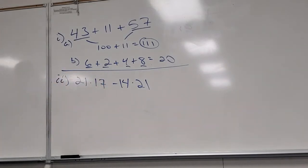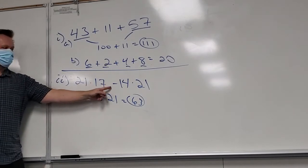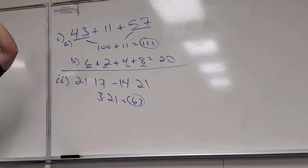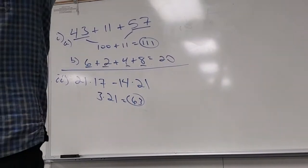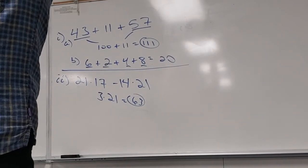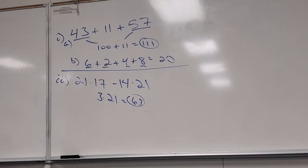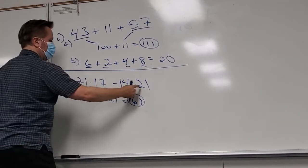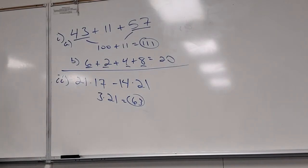Seventeen twenty-ones in a row minus fourteen twenty-ones — fourteen of them cancel, so it really is seventeen things minus fourteen things equals three of those things. Three twenty-ones is sixty-three. This trick works because seventeen x minus fourteen x equals three x — same problem, just up here you know what x is, so you can do that last step.